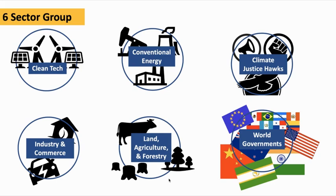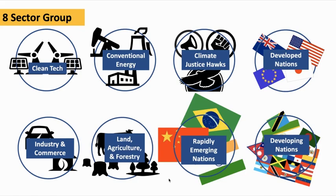The final group is world governments — representatives of governments from around the world. There is a popular variation where you break that last group into three separate groups: one representing developed nations such as European Union countries and the United States; one representing rapidly emerging economies like China, Brazil, and India; and a third representing other developing nations — small island nation states, countries throughout Southeast Asia, the Middle East, Africa, and South America.